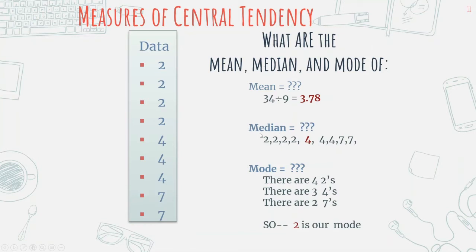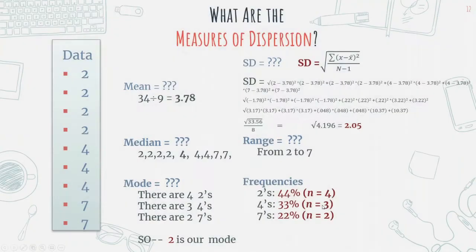For the median, you put the attributes in order and pick the one literally in the middle — there are four on one side, this is the fifth one, and four on the other side, so this is the median. For mode, we look for the most frequent response. There are four twos, three fours, and two sevens — so two is the mode.